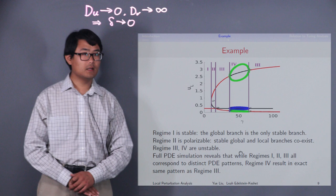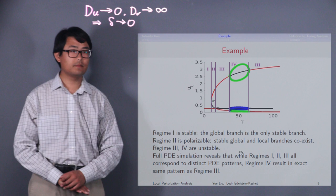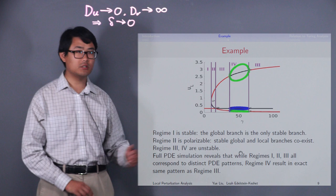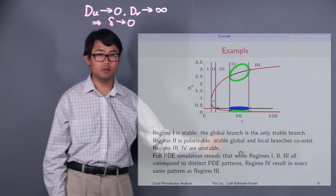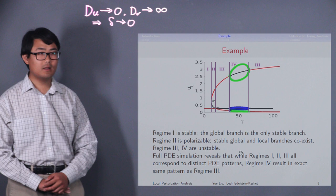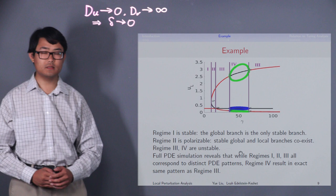Regimes three and four, in these two regimes, the global branch is unstable here. And we have either a stable local branch of equilibrium, like in regime three, or a stable limit cycle, as in regime four. In these regimes, an infinitesimal perturbation can lead to pattern formation. It can be shown that this kind of regime corresponds to what is known as a Turing unstable regime, which we will talk about next.